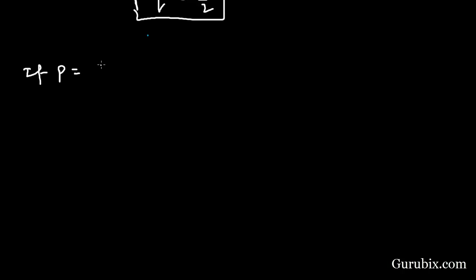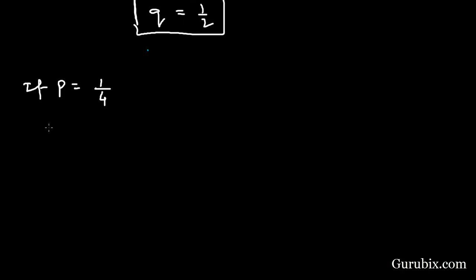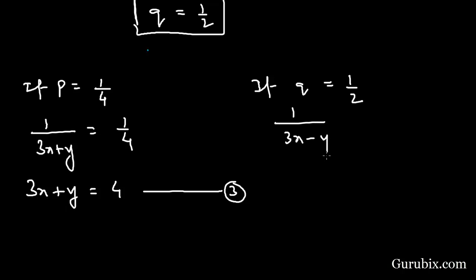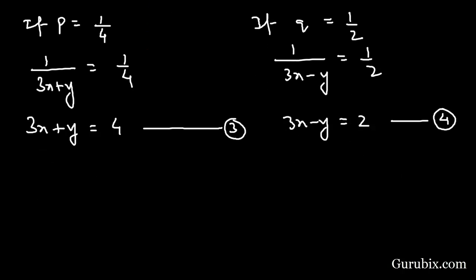Now we find the values of x and y. Since p = 1/4, we have 1 over (3x + y) = 1/4. Cross-multiplying gives 3x + y = 4 — this is equation number 3. Since q = 1/2, we have 1 over (3x - y) = 1/2, so 3x - y = 2 — this is equation number 4.